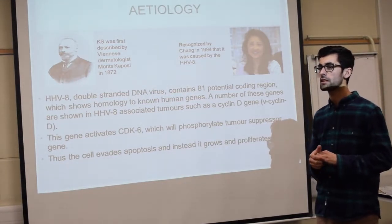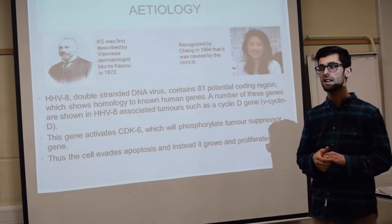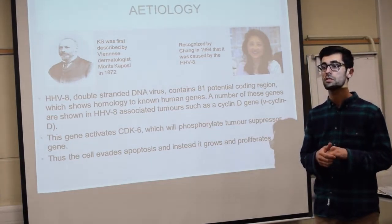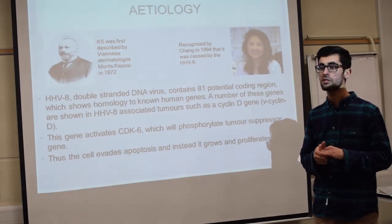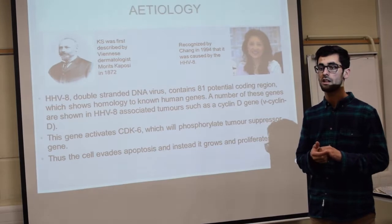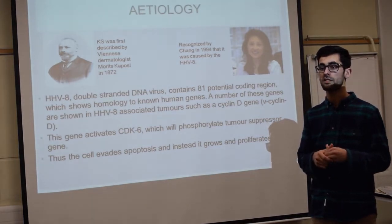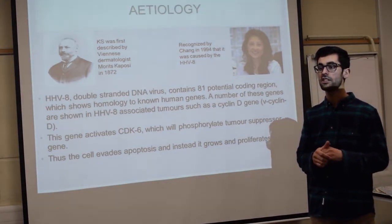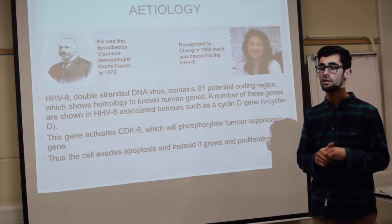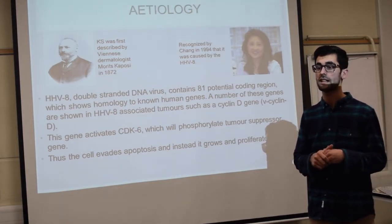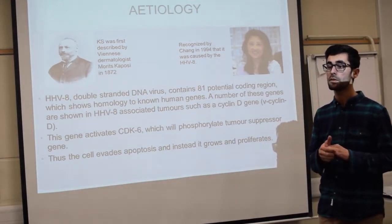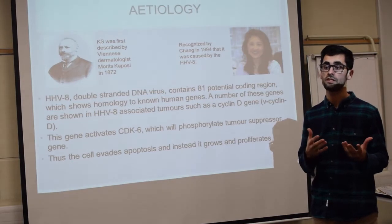HHV8 is a double-stranded DNA virus which contains about 81 potential coding regions that show homology to human genes. A number of these genes in HHV8 are associated with tumors, such as the cyclin D gene. This gene contains CDK6, also known as cyclin-dependent kinase.